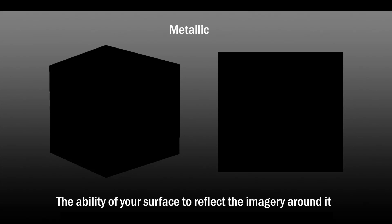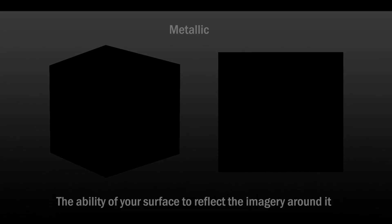The next one we'll show off is the Metallic Map. This may look a little strange to anyone new to texture mapping. Essentially your Metallic Map controls the ability of your surface to reflect the imagery around it — reflecting the environment nearby. In this case our bricks have a Metallic Map but there's no metalness to the surface, which means the texture is going to be completely black.